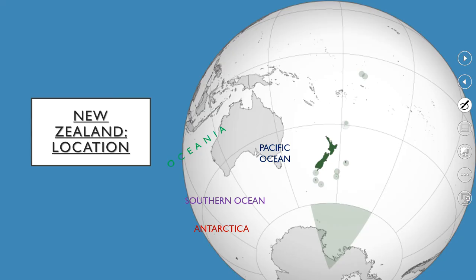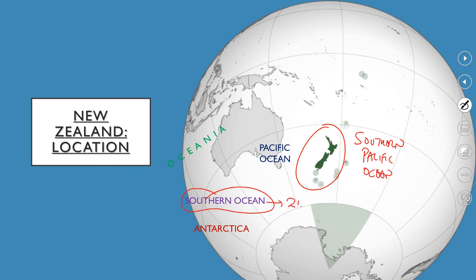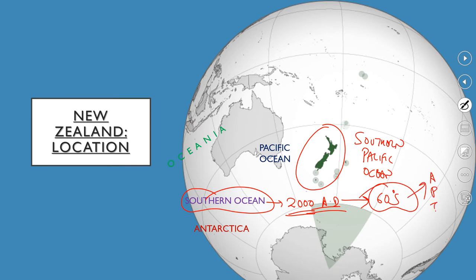Let's have a look at the location of New Zealand first. New Zealand is an island country located in the southern Pacific Ocean. In fact, the southern part of all the oceans has been renamed in the year 2000 as the Southern Ocean. We saw the mapping of the Southern Ocean in detail in a separate session. The Southern Ocean is demarcated as the water areas south of 60 degrees south latitude. It combines the waters of the Atlantic Ocean, Pacific Ocean, as well as the Indian Ocean. Apart from this, New Zealand is located towards the south-east of Australia.